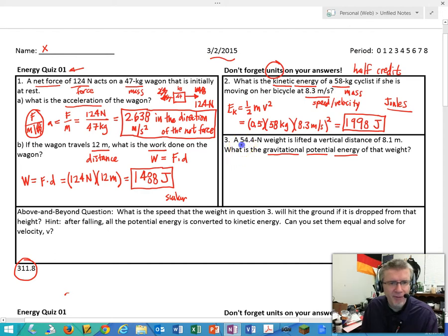Let's go on to number three here. So a 54.4 newton weight is lifted a vertical distance of 8.1 meters. What is the gravitational potential energy of that weight? So we have potential energy is mass times gravity times height. But you know I don't see a mass in this question, this is a force, newtons. But it's a force of gravity. So what I was hoping people would remember is that this here is a weight. So that right there is 54.4 newtons, that's the force of weight on this object due to gravity.